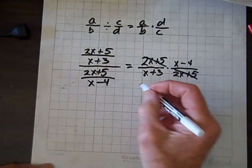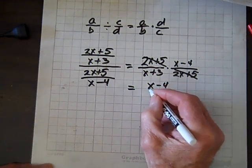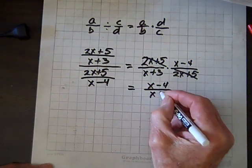In this case, those are identical and they divide out, and we get (x-4)/(x+3).